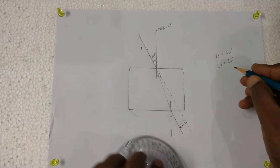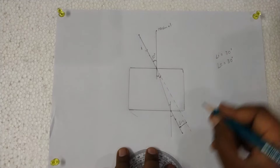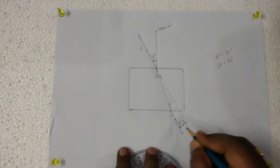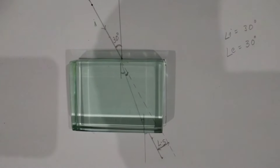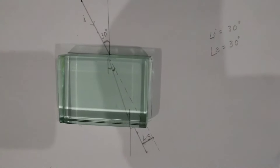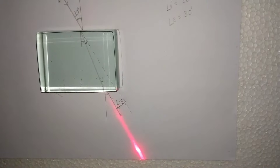We can verify this by using a protractor or by shining a laser light along the incident ray. If the emergent ray of the laser comes through the emergent ray we have drawn, then our experiment is correct. I am now shining a laser light along the incident ray — see, the light ray is emerging out exactly along the emergent ray which I have drawn. So what we have done is correct.